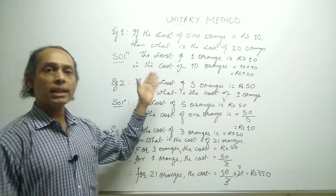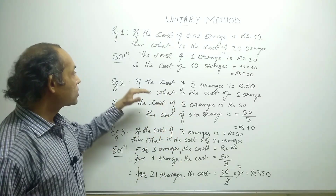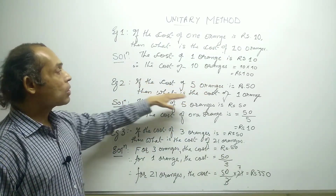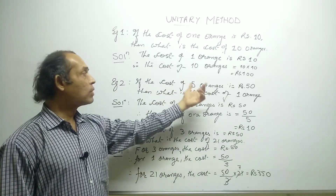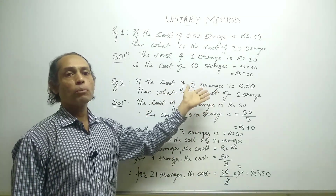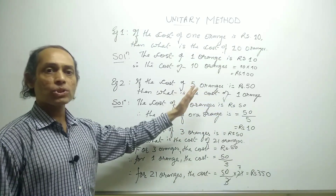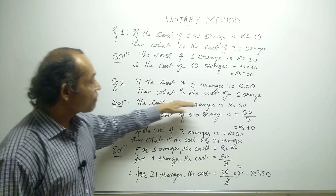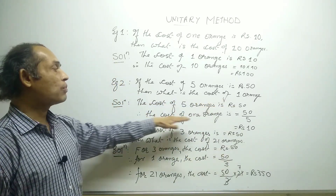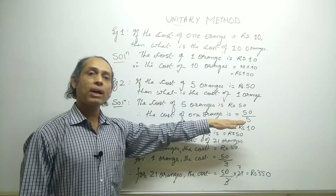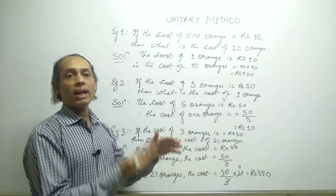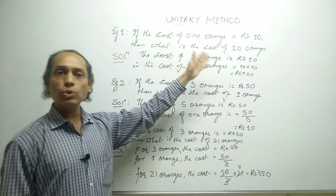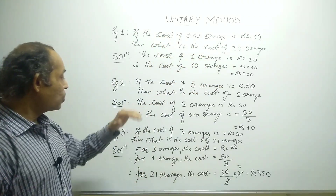Moving to example two — this is the case of many to one. If the cost of five oranges is rupees 50, then what is the cost of one orange? The cost of five oranges is rupees 50, so the cost of one orange will be 50 divided by 5. When going from many to one, we use division; when going from one to many, we use multiplication.